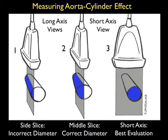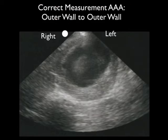A better orientation is to position the probe in the short axis configuration as shown in probe position three. One can then get a sense of the true lumen and obtain the best measurements of the abdominal aortic aneurysm.